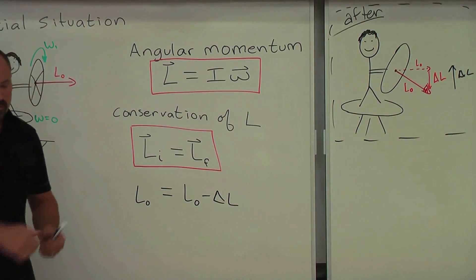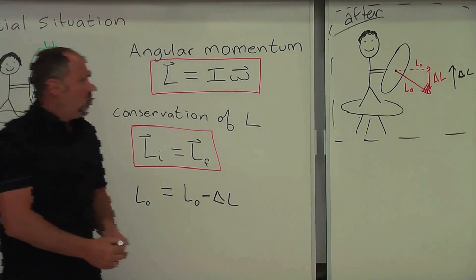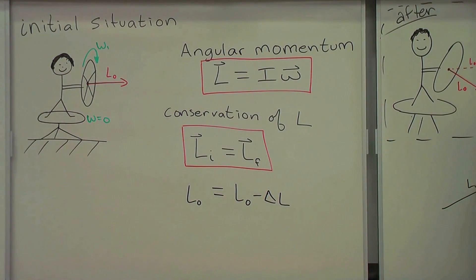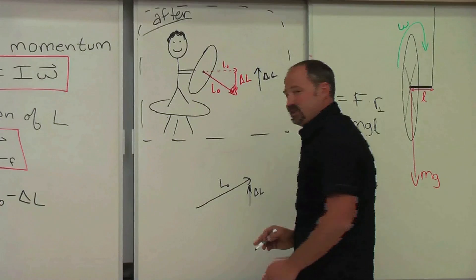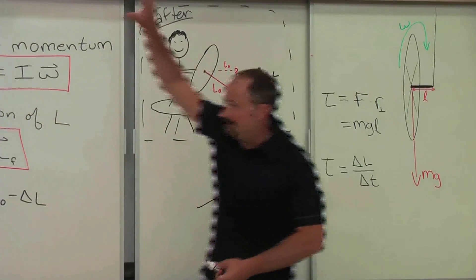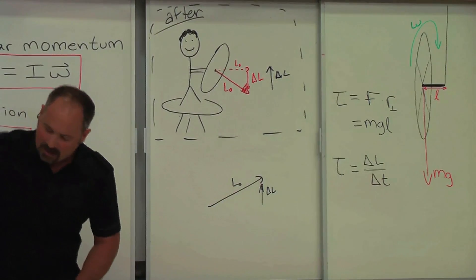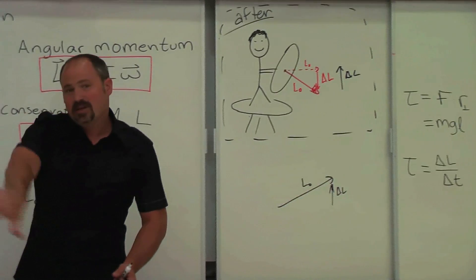And you can see, when I spin it the other way, well, if you go up, then we have a positive delta L, and therefore the platform has to have a negative delta L, and therefore we spin this way.